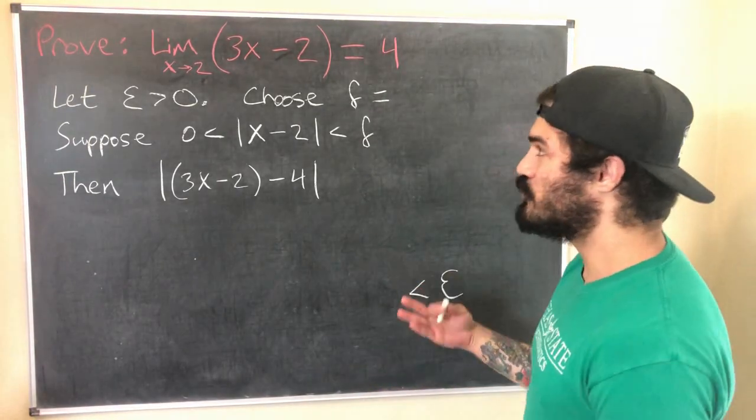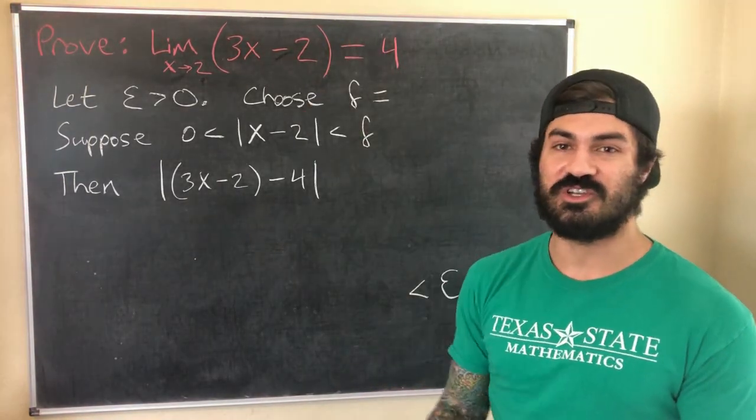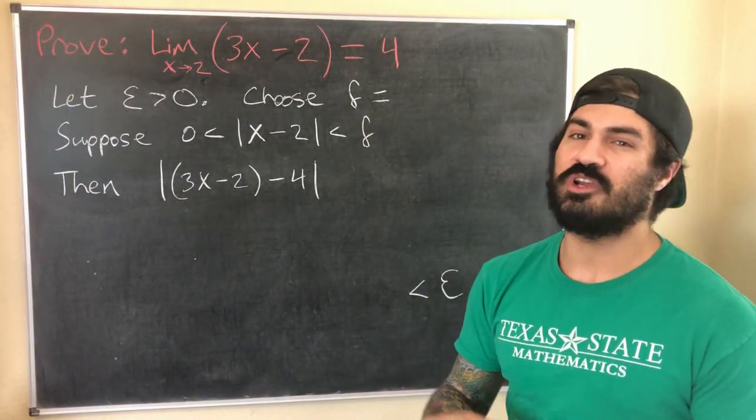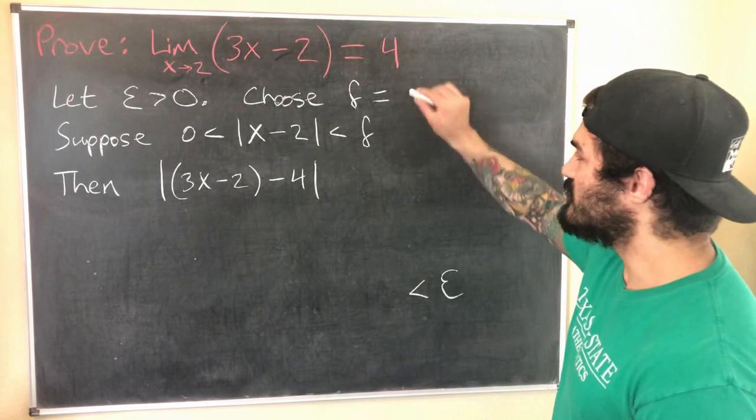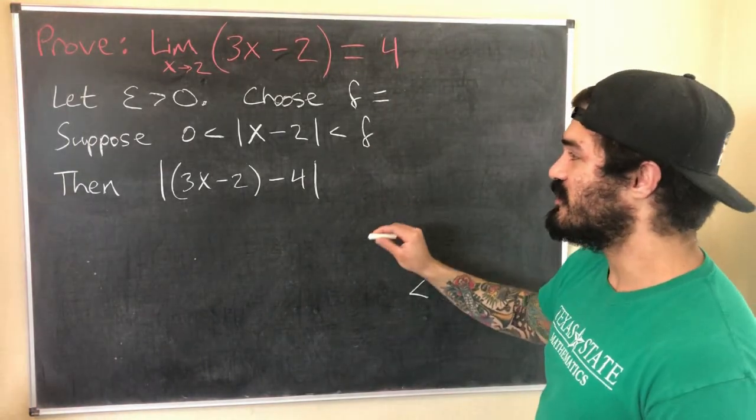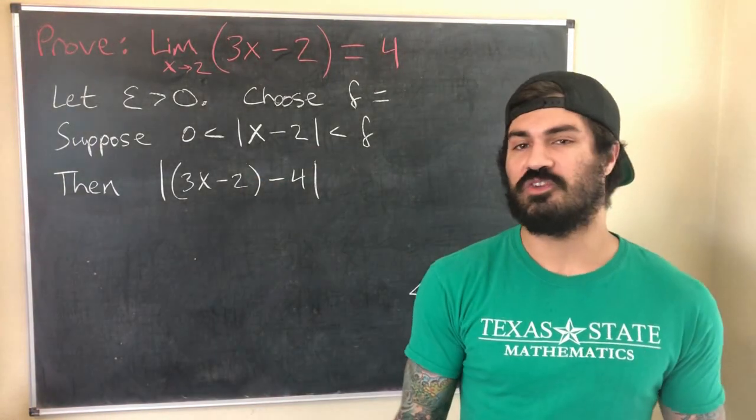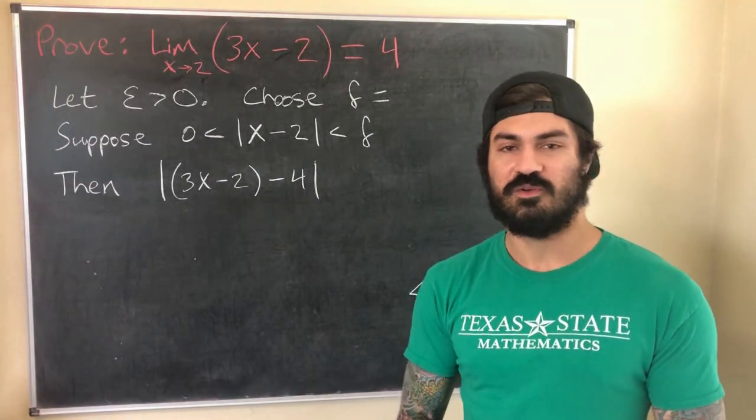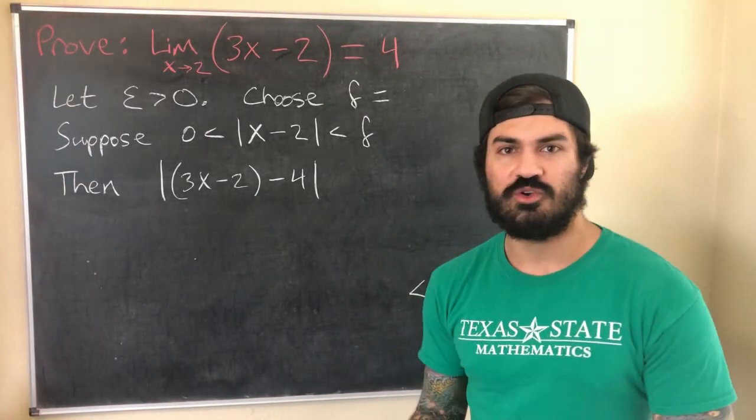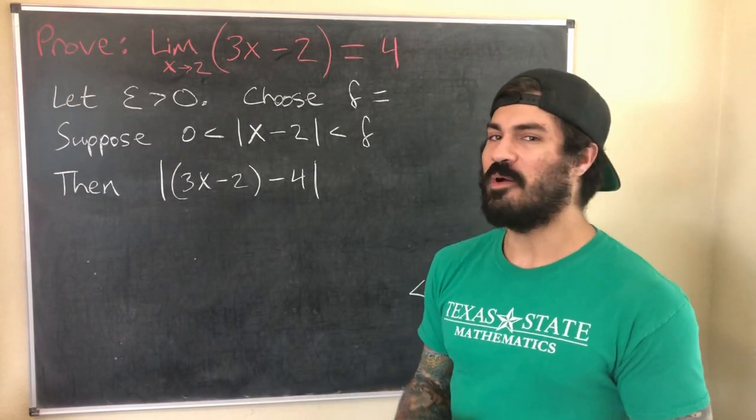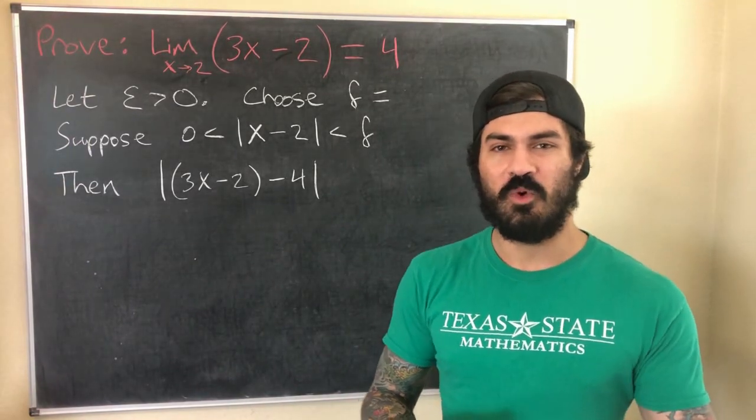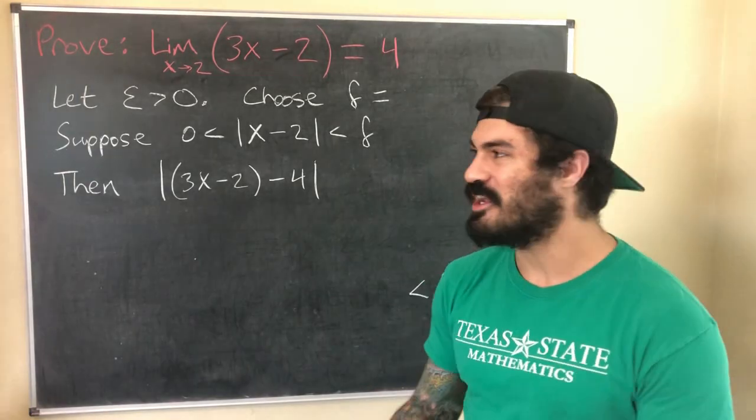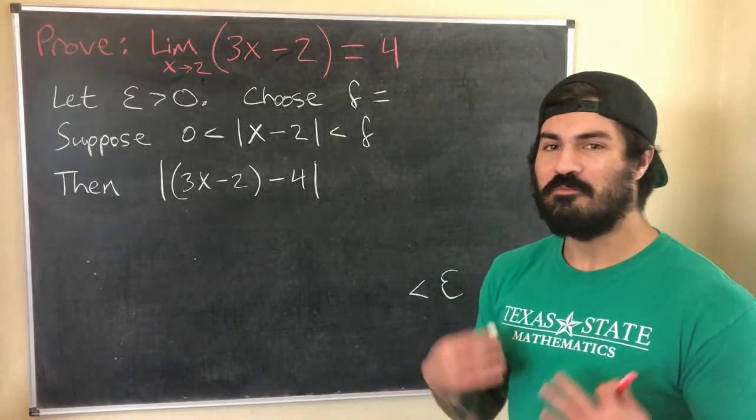So that's our goal, is to show that this is less than epsilon. And there is some scratch work involved in finding this delta, but this is the general way I outline these proofs, especially for linear functions, and it works really well: set everything up, do the scratch work, find the delta, go back, put the delta here, and then the rest of it just kind of falls out. And that's the cool thing about making these videos - sometimes I go back and watch and I think why did I do it that way, this way is so much easier.